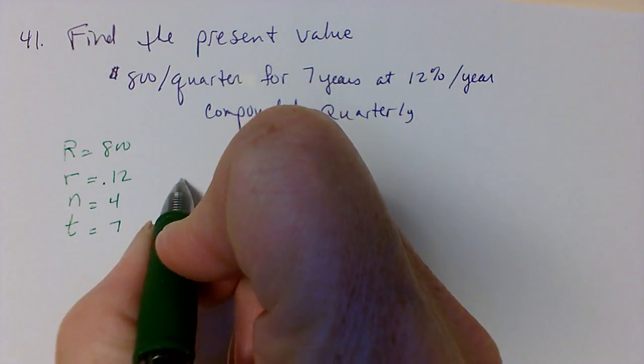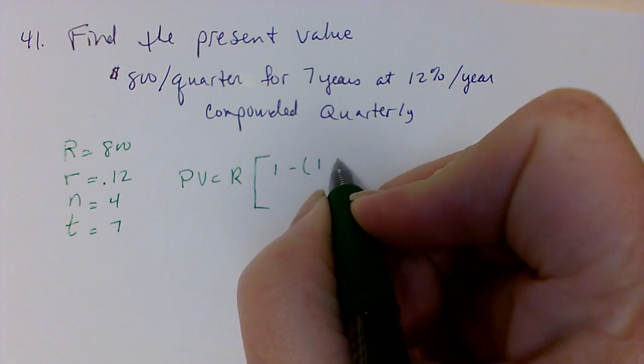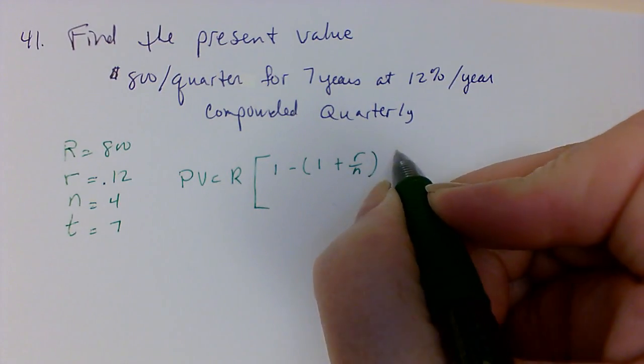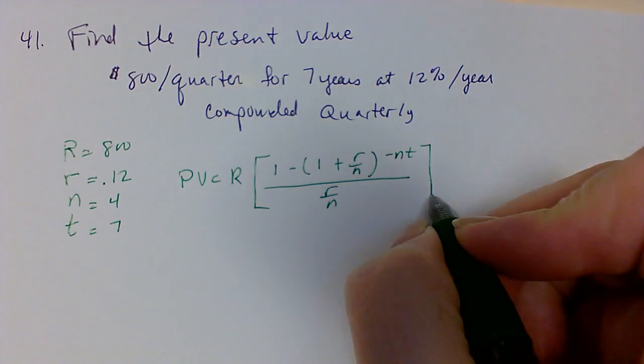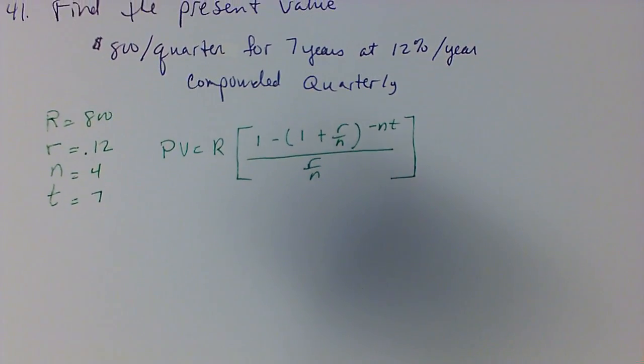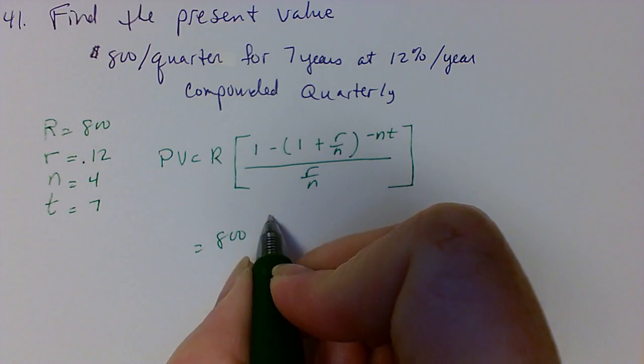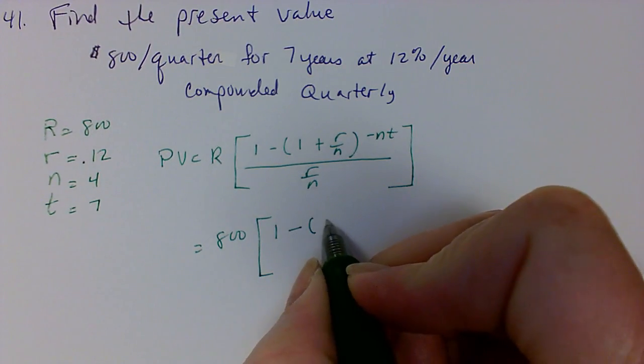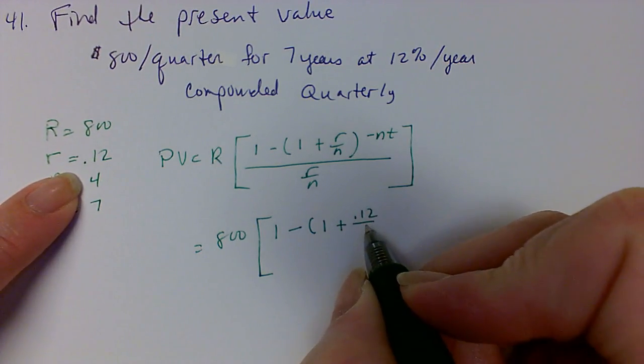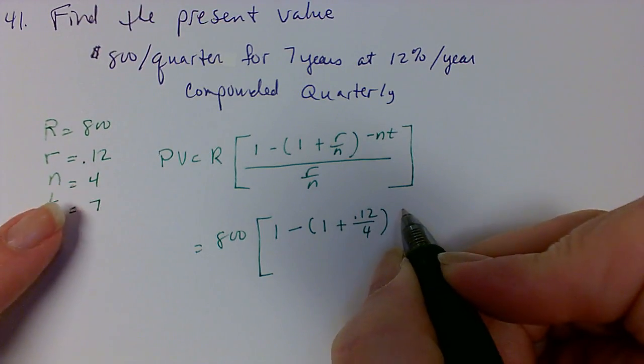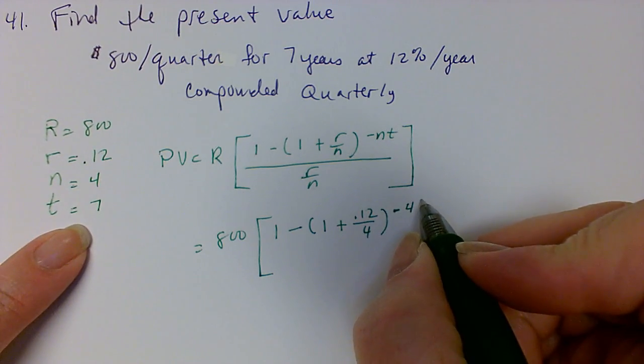Now our formula for present value is PV equal to R times one minus one plus r over n raised to the negative nt all over r over n. So all we have to do is plug in our values. This is going to equal eight hundred times one minus one plus 0.12 over four raised to the negative four times seven.